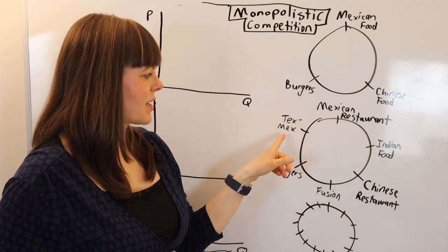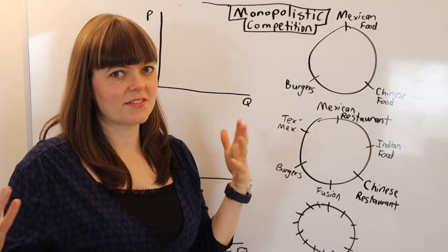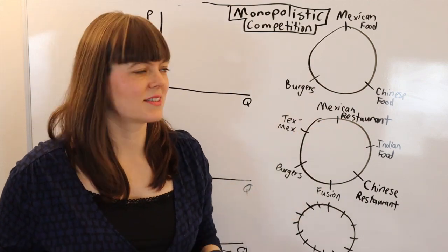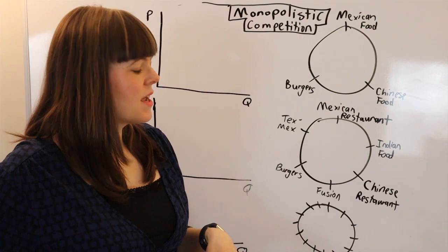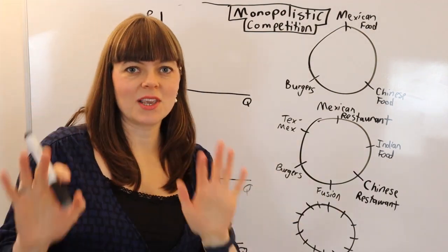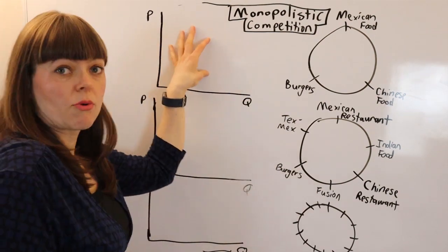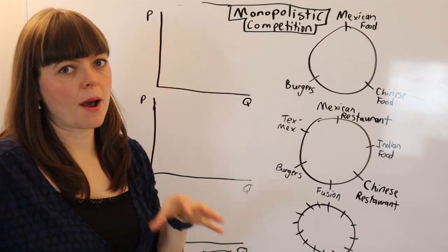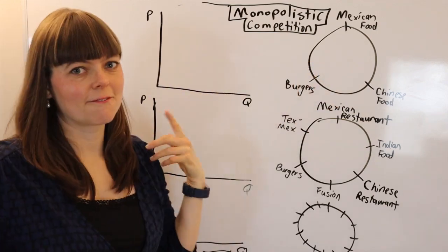The Tex-Mex restaurant cannot raise their prices too high, because if they do, people will go have a burger or will go have Mexican instead. Each of these situations is going to have a representative firm that uses a monopoly model. Let's look at the top case first.